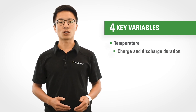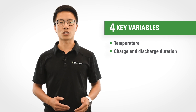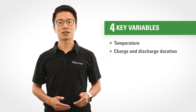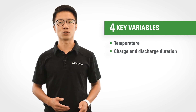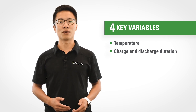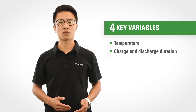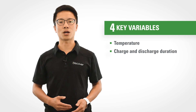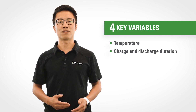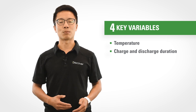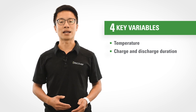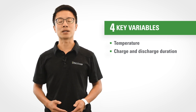The charging and discharging duration and the currents that you choose also affect cycle life. It could be a long charge or a short charge versus a long discharge or short discharge. This all affects the number of cycles you can get out of the battery.